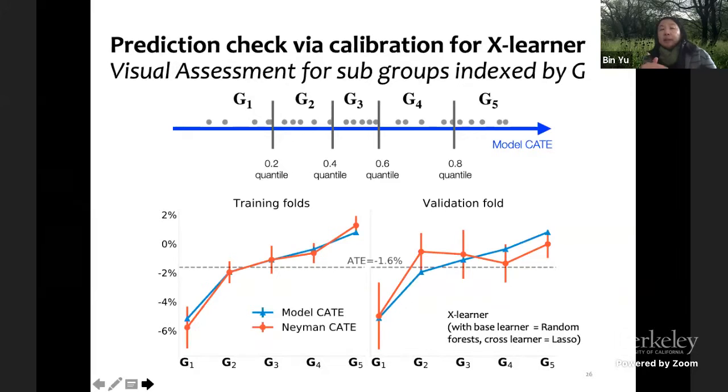And then we look at for each model. So this is one of the X-learners with base-learners random forest and cross-learners lasso. You look at the groups in terms of the predicted or estimated heterogeneous estimates through CATE and cut it into five groups. Then we look at the training folds and validation folds. The model CATE means you use the model, which is random forest underneath and lasso. You can see that the lower group is pretty stable and the second group not so much. This group seems to have a clear benefit for Vioxx relative to naproxen, the two drugs.